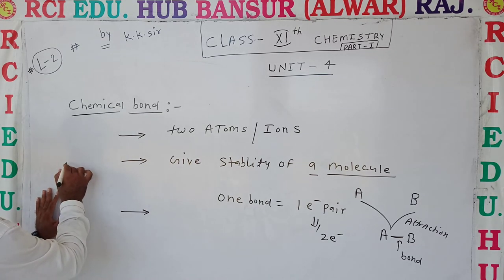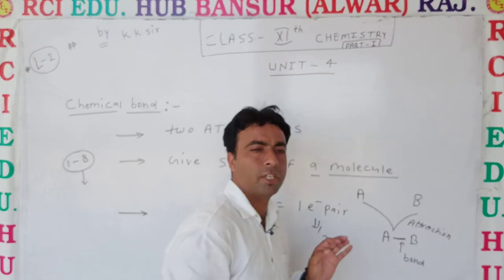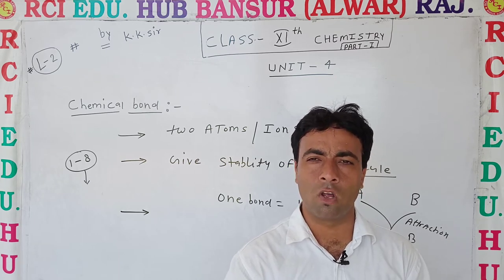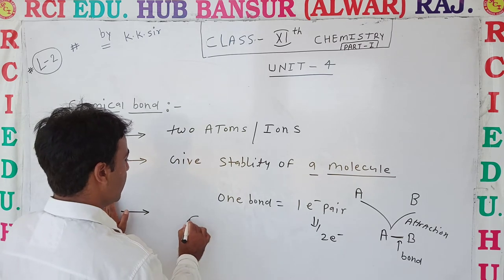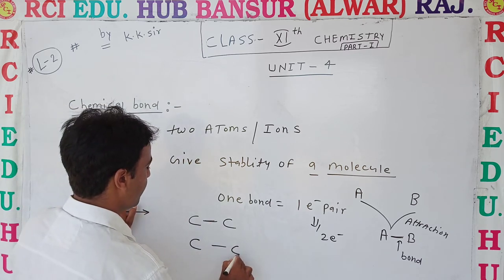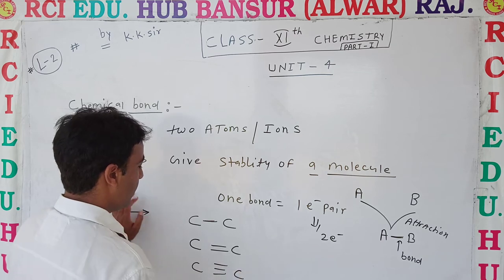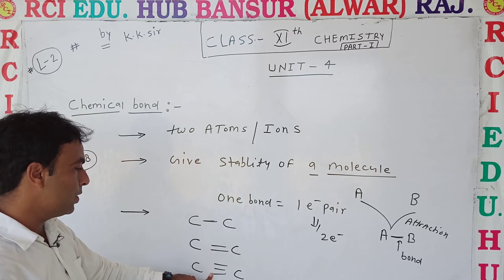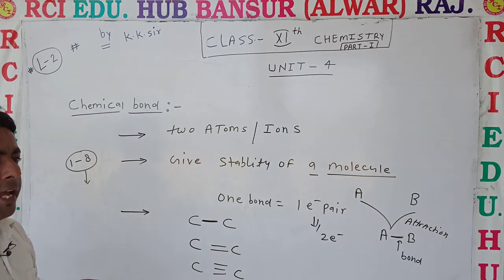In inorganic compounds, the central atom can form one to eight bonds. In organic compounds, there will be formation of four bonds, because the central atom is mostly carbon, which has four valence electrons. Carbon–carbon single bond is one line, carbon–carbon double bond is two lines, and carbon–carbon triple bond is three lines.